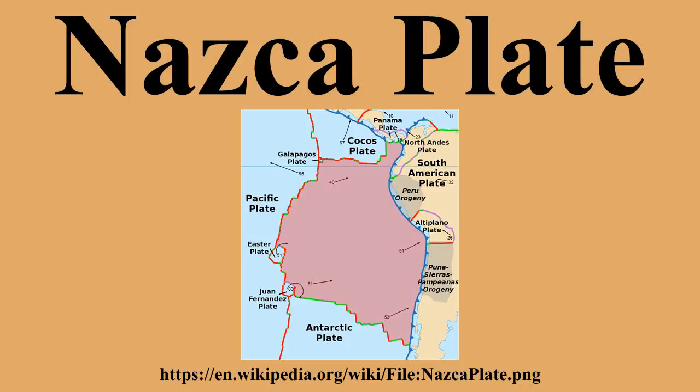The largest recorded earthquake was the moment magnitude 9.5, 1960 Valdivia Earthquake. A second triple junction occurs at the northwest corner of the plate where the Nazca, Cocos, and Pacific plates all join off the coast of Colombia. Yet another triple junction occurs at the southwest corner at the intersection of the Nazca, Pacific, and Antarctic plates off the coast of southern Chile. At each of these triple junctions an anomalous microplate exists — the Galapagos microplate at the northern junction and the Juan Fernandez microplate at the southern junction.